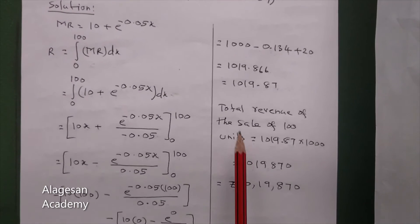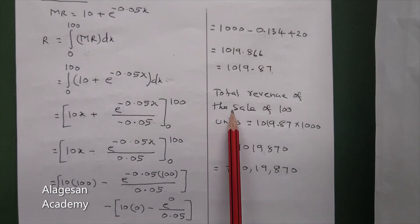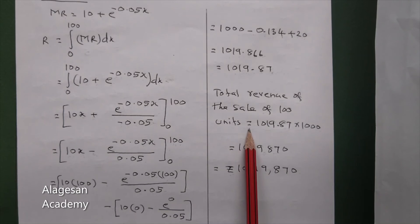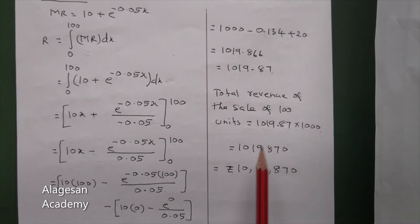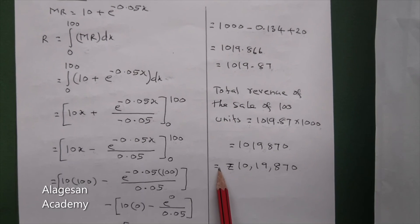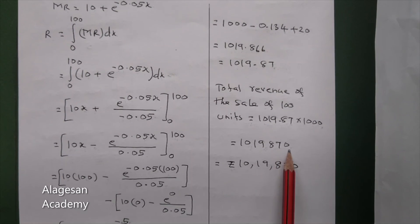So the total revenue of the sale of 100 units equals 1019.87 into 1000, which is rupees 10,19,870.